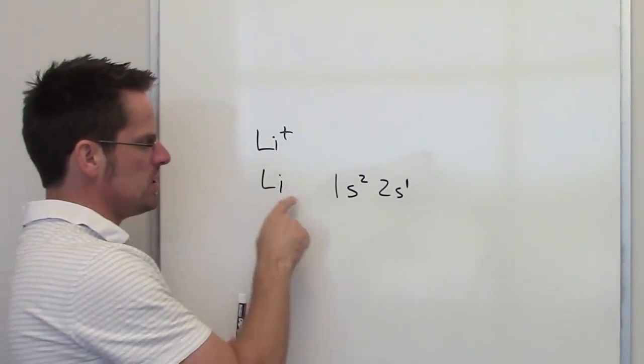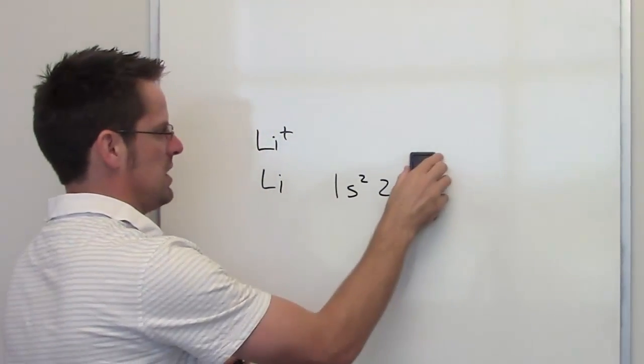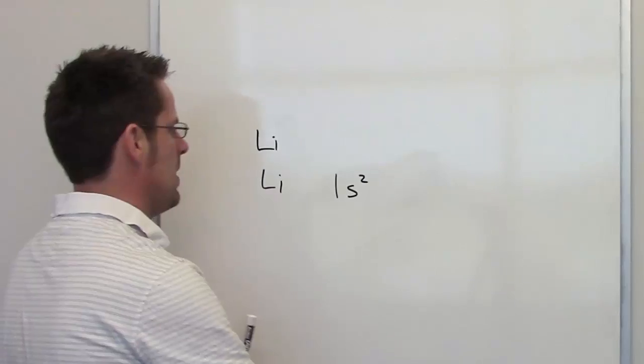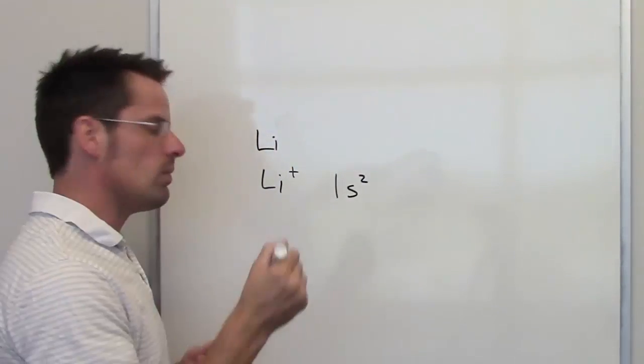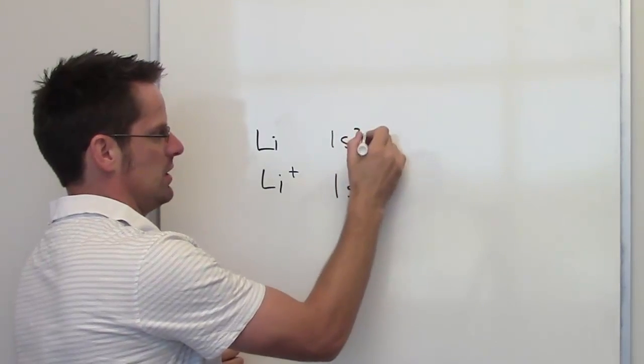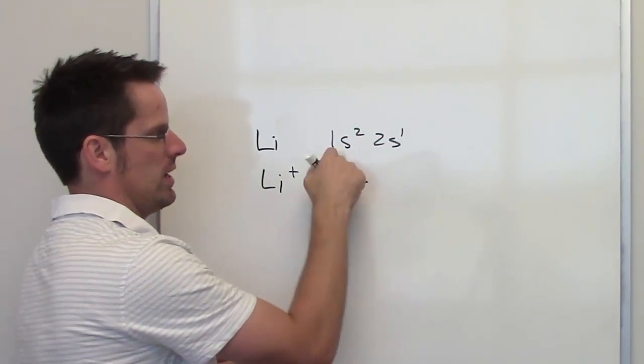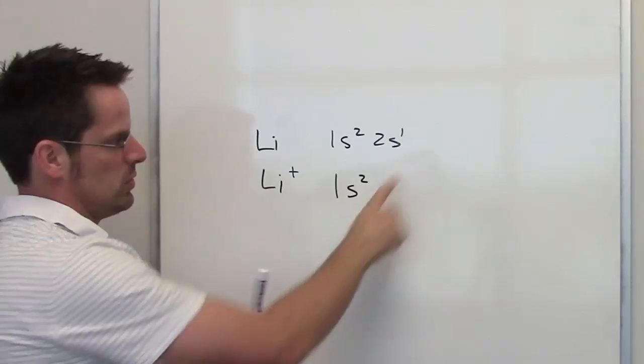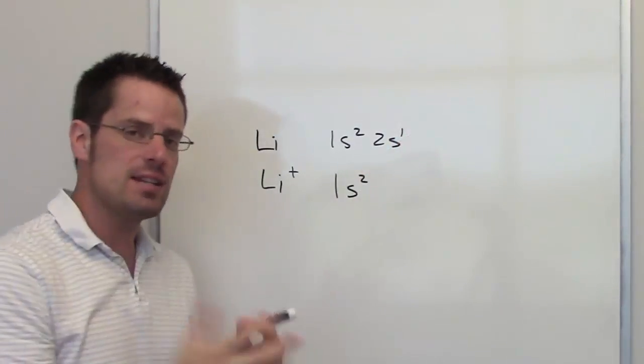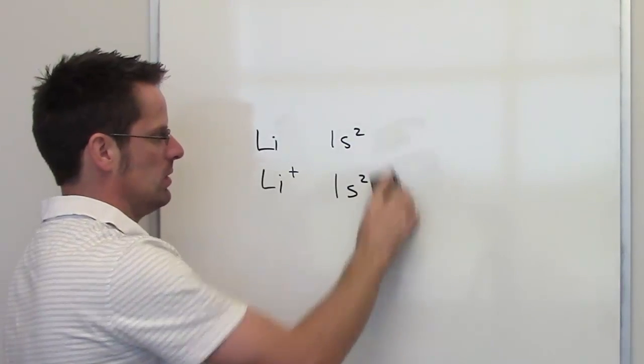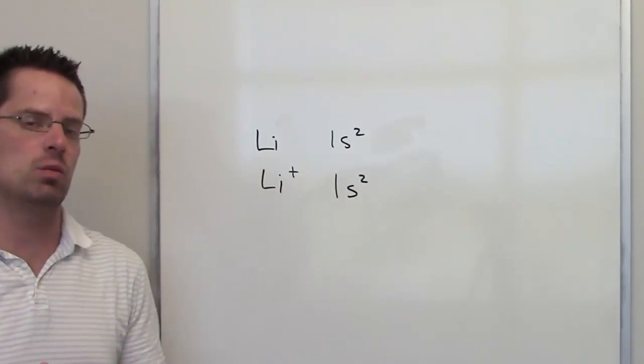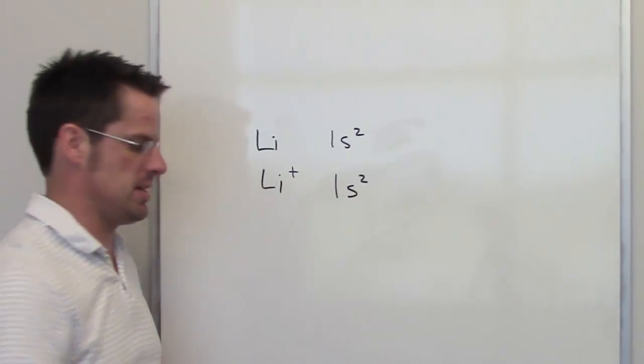As lithium loses that outermost electron to become lithium cation, it now has the same electron configuration as that of helium. Once again, neutral lithium has an electron configuration of 1s2, 2s1. As it loses this outermost electron, its size is reduced by losing the occupation of that orbital to just become 1s2. So lithium cation would be smaller than neutral lithium.